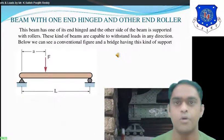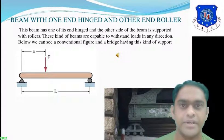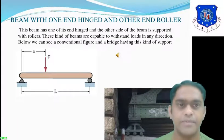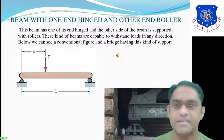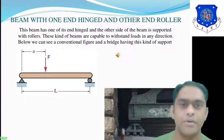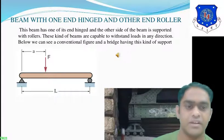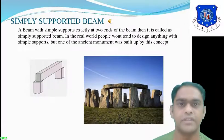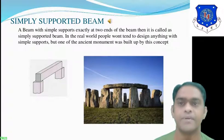A beam with one end hinge and the other end as roller: this beam has one end hinged and the other side supported with rollers. The load F is acting at a distance 'a' from the left support, and the length of the beam is 'L'. This kind of beam is capable of extending loads in any direction. Below we can see the conventional figure of a beam with one end hinge and the other end roller.